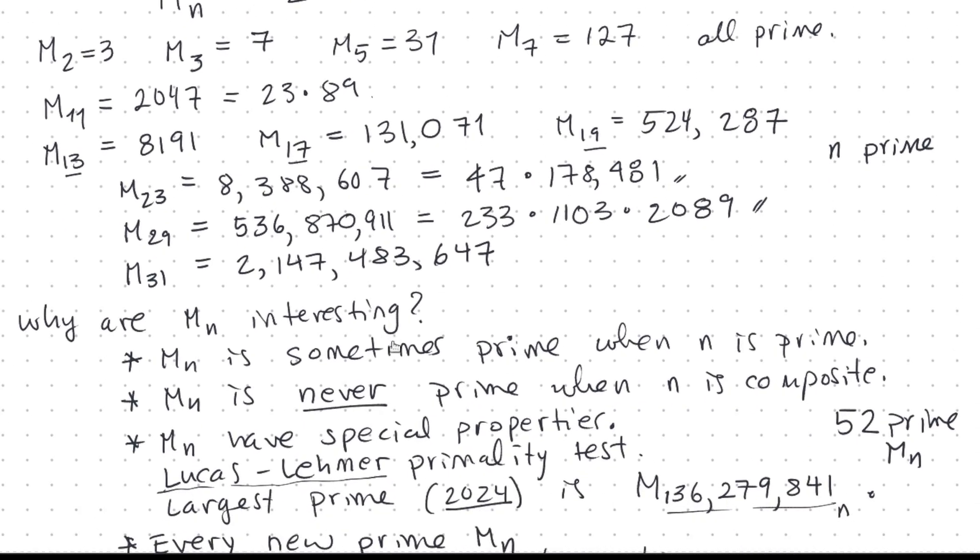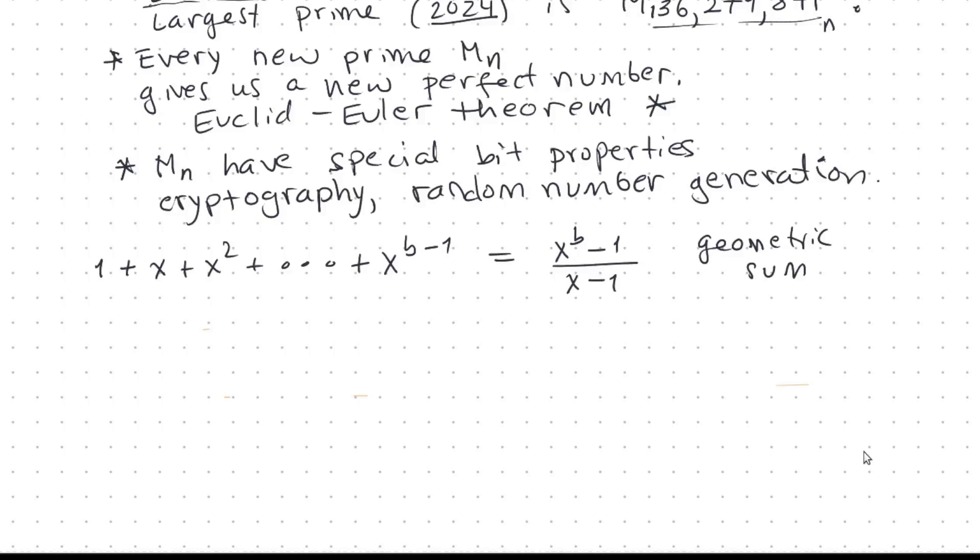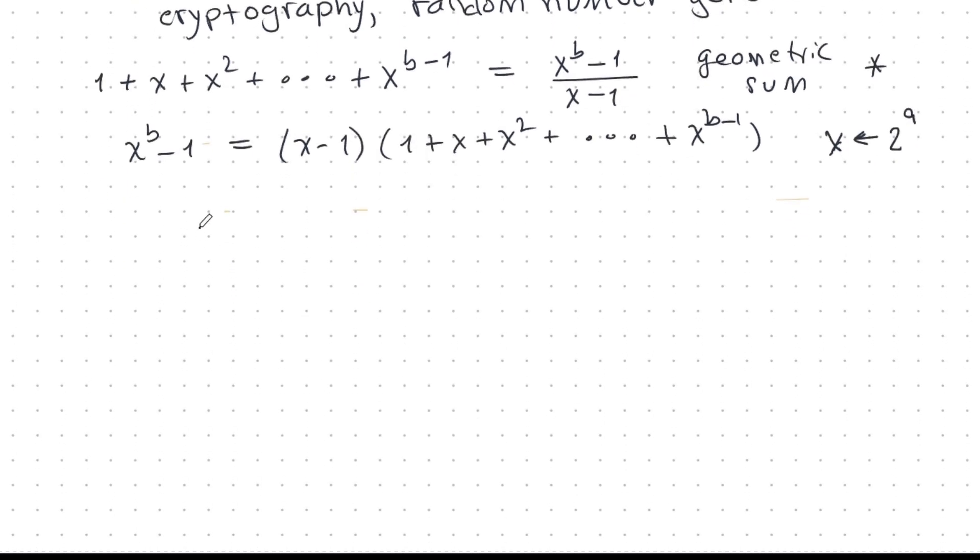Also, every time that we discover a new prime Mersenne number, this gives us a new perfect number, a new even perfect number. And this is a consequence of a theorem called the Euclid-Euler theorem, or maybe Euler-Euclid theorem. And it's a really nice theorem, and I think I will do a video on that soon. Finally, we have the fact that the Mersenne numbers have special bit properties, and this gives applications to cryptography. Cryptography and random number generation. You may have heard of Mersenne twister.